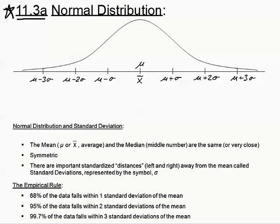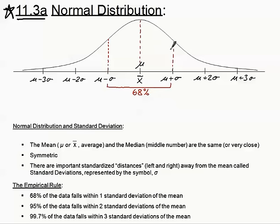We're also going to talk about the empirical rule, which tells us what percent of our data falls in each region. Sixty-eight percent of the data falls within one standard deviation of the mean — that's the middle region between one standard deviation to the left and one to the right. Since the curve is symmetric, we cut that 68% in half: 34% is in the left region and 34% is in the right region.